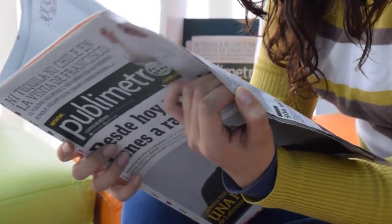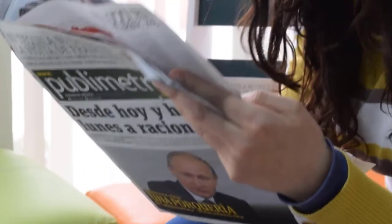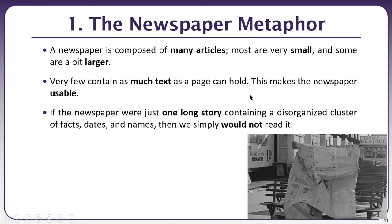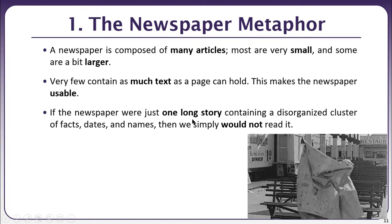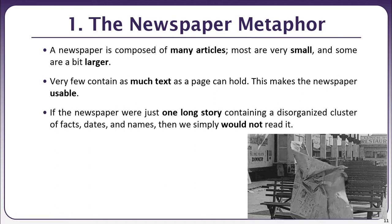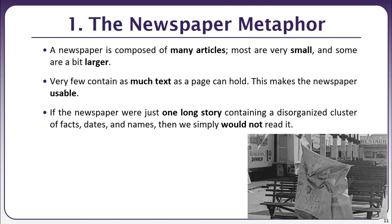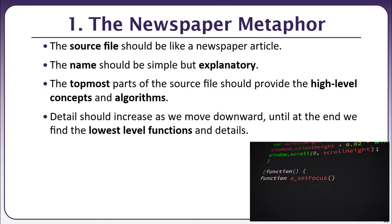A single newspaper may be composed of many articles, some smaller than others, with very few containing as much text as a page can hold — this makes the newspaper usable and readable. If the newspaper were just one long story containing a disorganized cluster of facts, dates, and names, we would simply not read it or it would be very difficult to understand and comprehend the bigger picture. Similarly, the source file should be like a newspaper article.